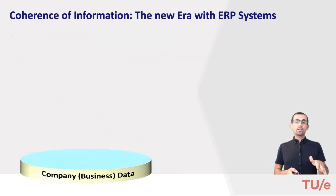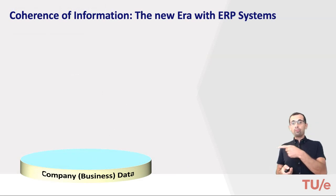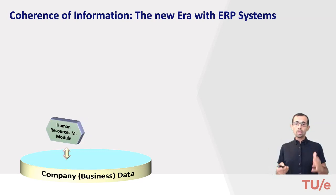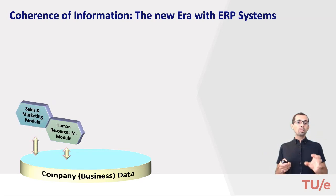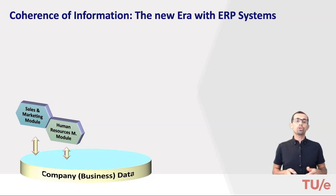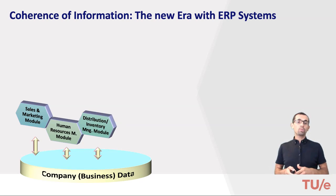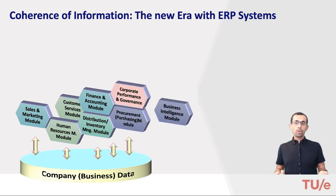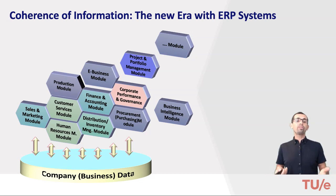If we visualize the ERP system functional architecture, at the bottom we have a shared data repository which implements a single conceptual model on which the functional modules operate. Implementation of such systems typically starts with core ERP modules like human resources, sales and distribution, inventory management, and finance and accounting — these are really the core modules that come to any organization's mind when it comes to ERP implementations — and continues with many other modules depending on the specific needs of the enterprise.